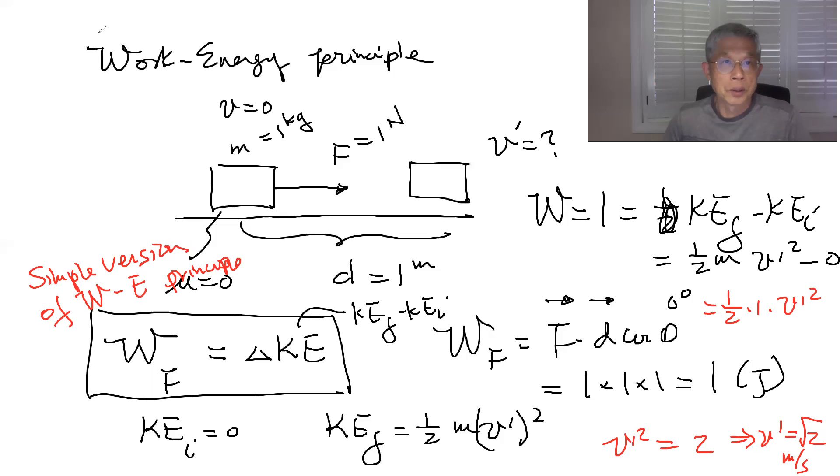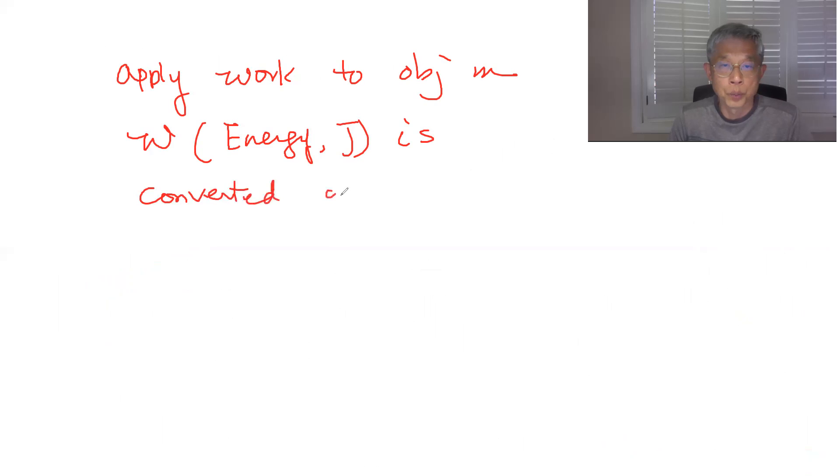So it basically says that the physical meaning is that we apply work to the object m and this work which is in the form of energy in joules is converted without loss of thermal energy because mu is equal to zero, friction coefficient equal to zero, converted without loss of thermal energy into kinetic energy increase.